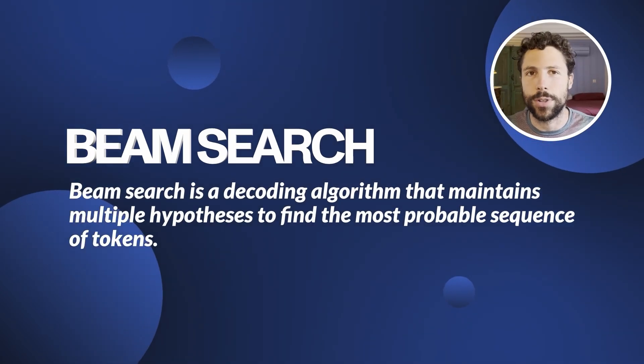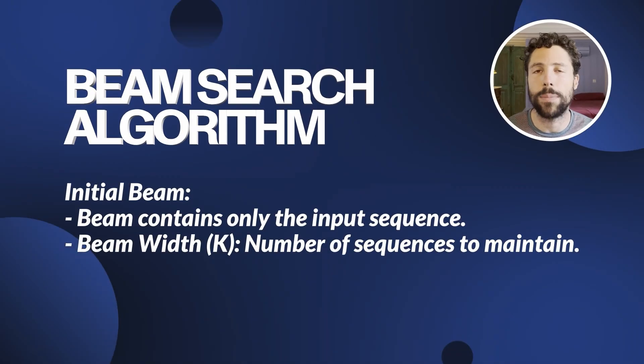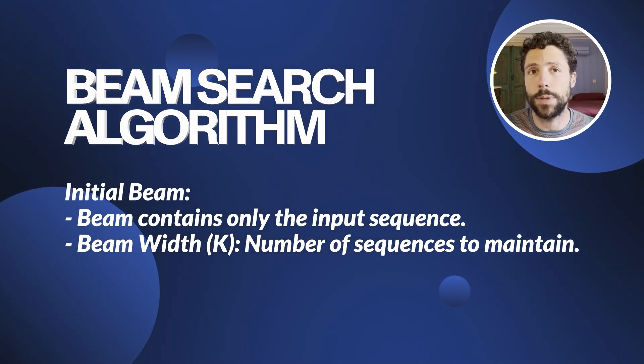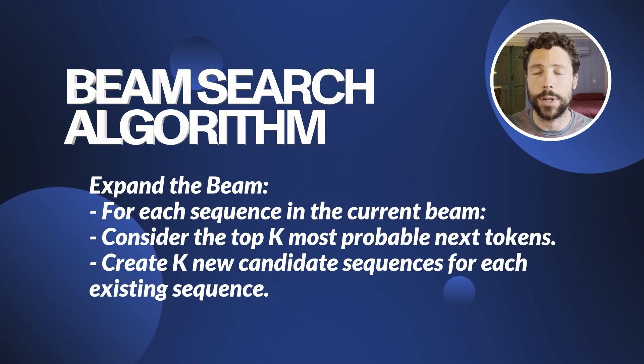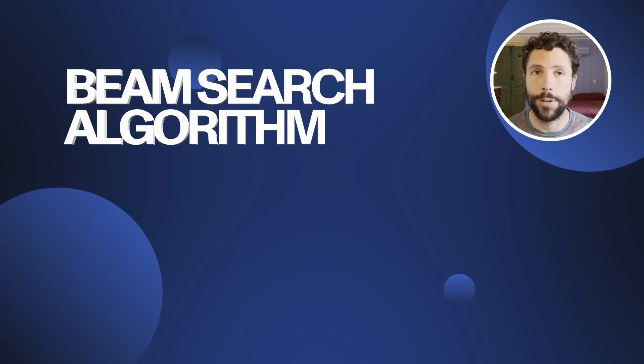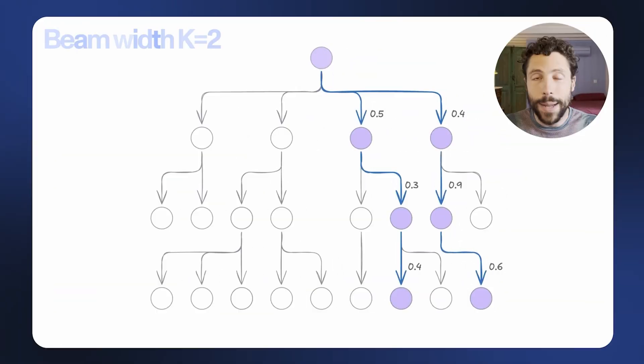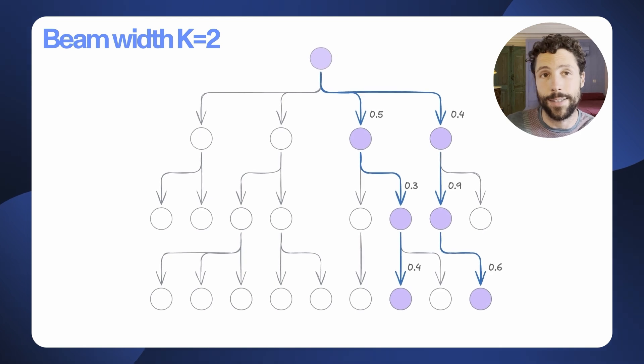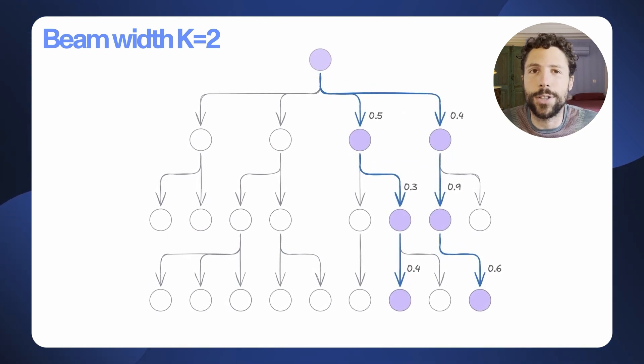Beam search is the natural generalization of greedy search, exploring multiple branches of the probability tree. It maintains a beam of the K most probable sequences at each step — K is the beam width. The algorithm considers the top K most probable next tokens for each sequence in the beam, expands each sequence with these tokens, and updates the beam by selecting the top K candidates. This produces higher quality text than greedy search depending on beam size, but can be slower due to more computations.